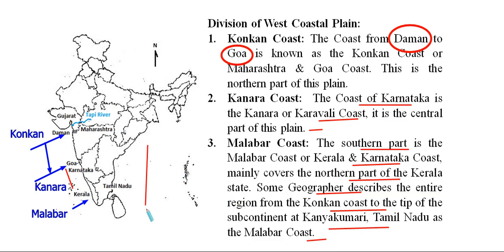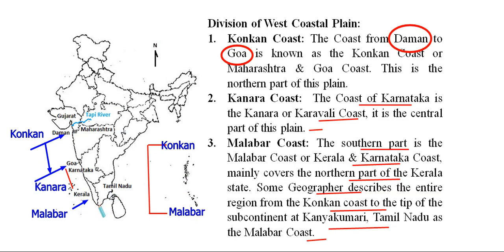According to some geographers, there are only two subdivisions of the Western Coastal Plain: the northern one is the Konkan Coast from Daman to Goa, and the southern one is the Malabar Coast — covering the entire region from Goa up to Kanyakumari, Tamil Nadu. So the northern half is Konkan and the southern half is Malabar.